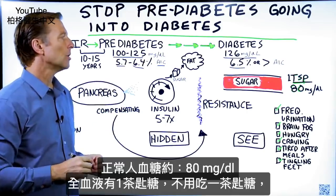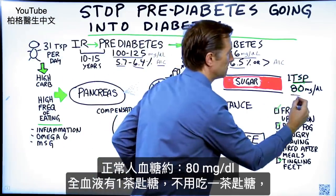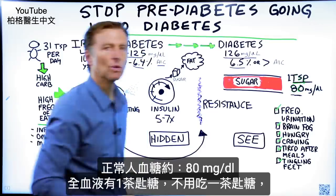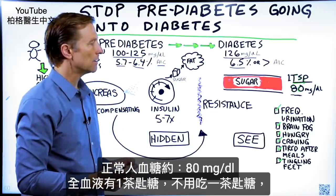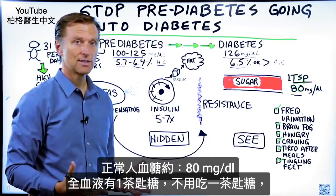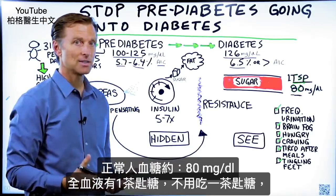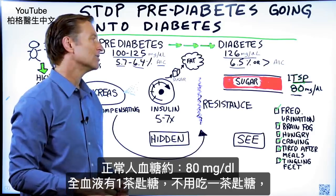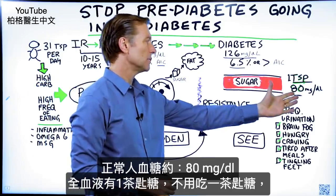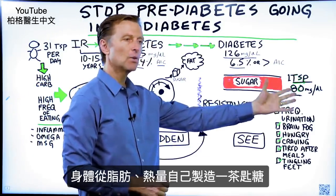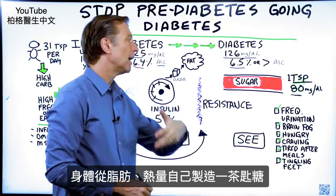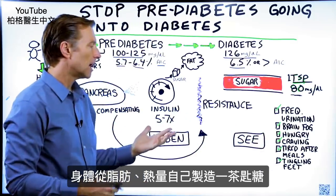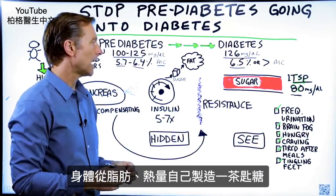A normal blood sugar should be about 80, and what that means is you have about a teaspoon of sugar in all of your blood. It's not that much, and you don't need to consume a teaspoon of sugar to get that. Your body will make its own sugar out of fat, out of other types of calories.